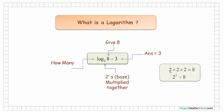In other words, 2 multiplied by itself 3 times, or 2 to the power of 3, is equal to 8.